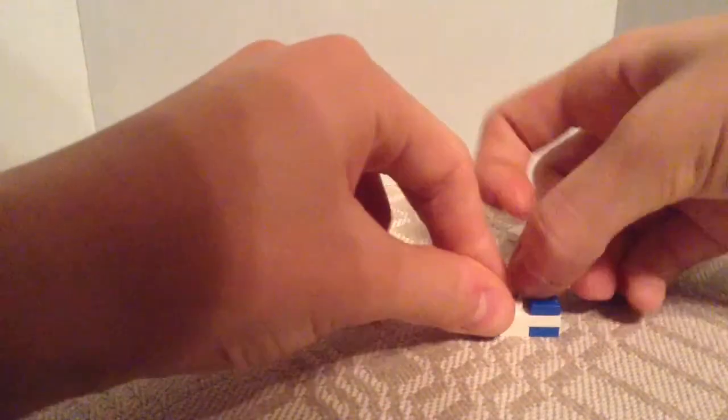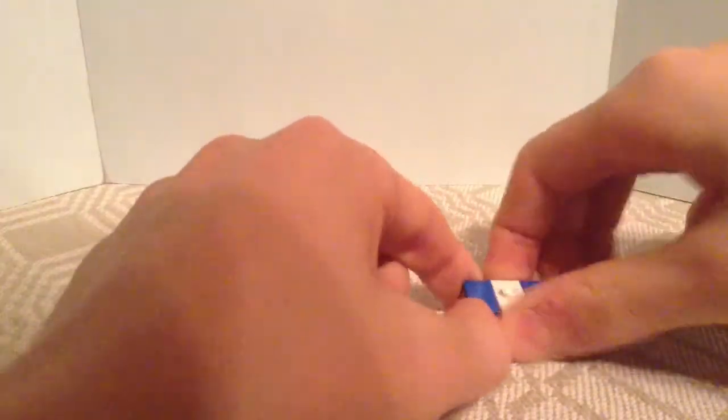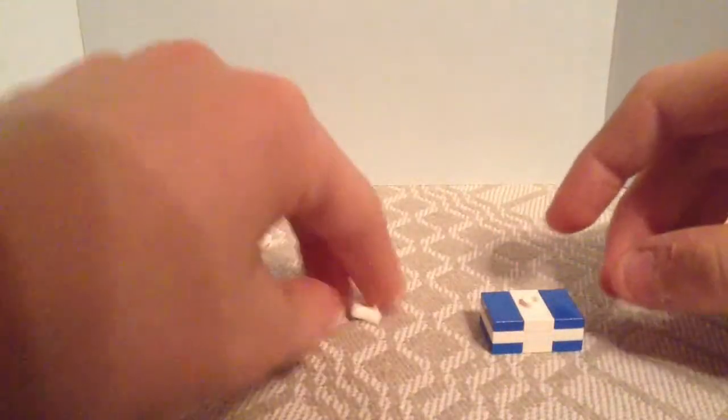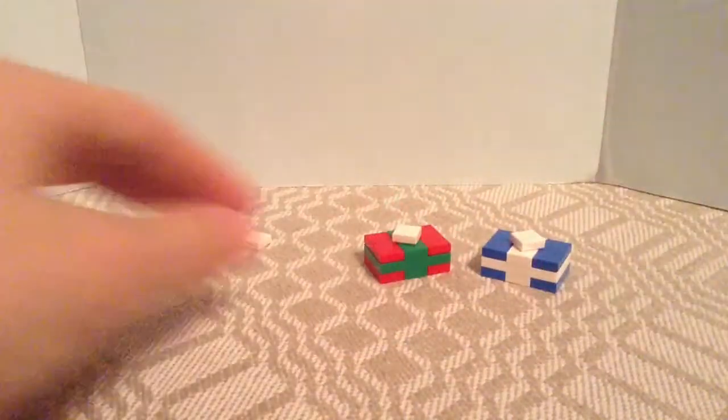Two 1x2 smooth blue tiles on the two sides and 1x2 with one knob in the middle. And 1x1 on top of it. So here are the gifts.